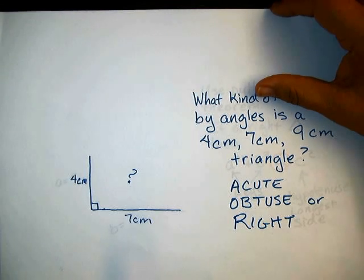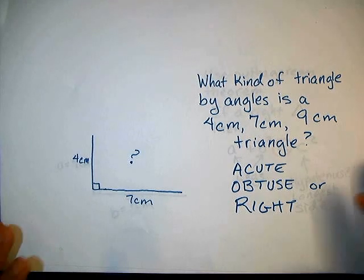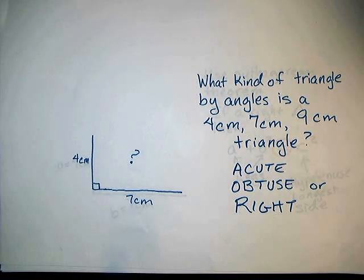Here's an example. I've got a 4 cm, 7 cm, and 9 cm triangle. Is it acute, obtuse, or right?